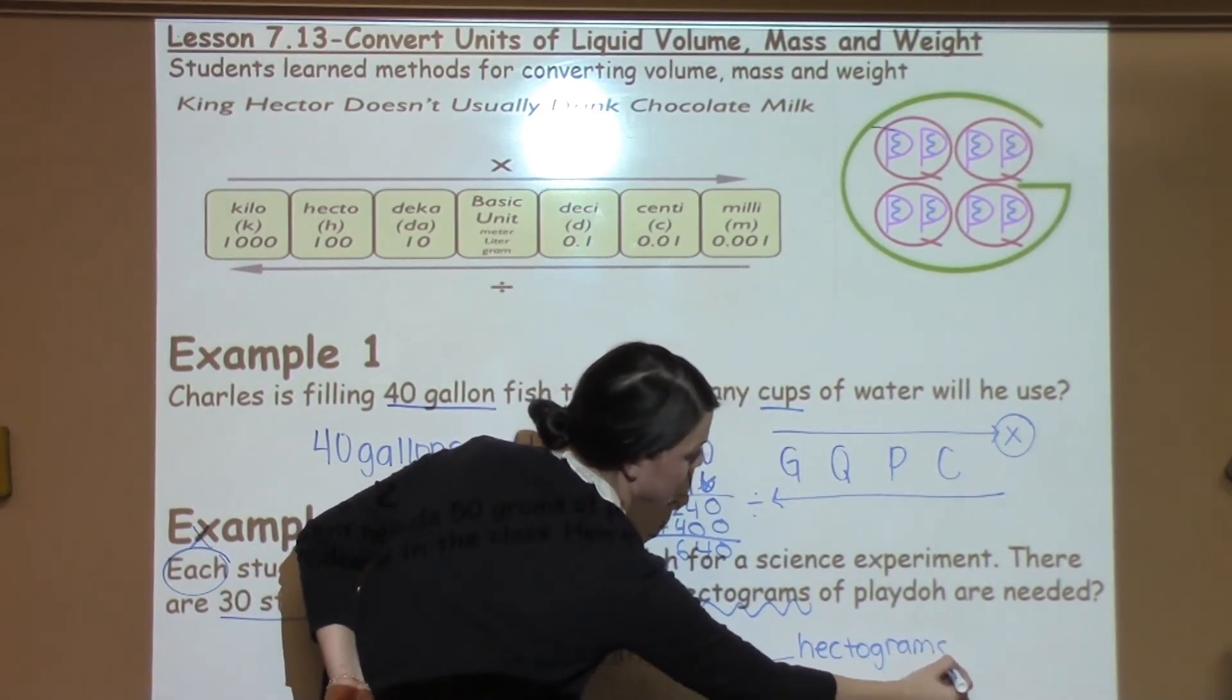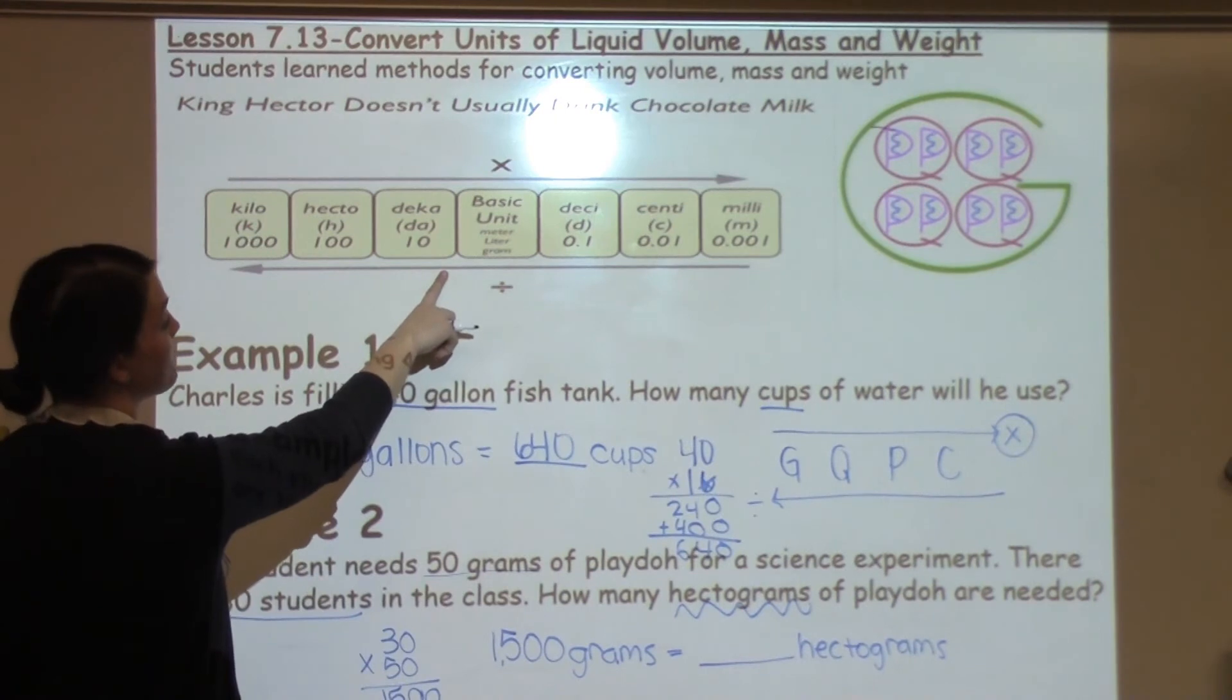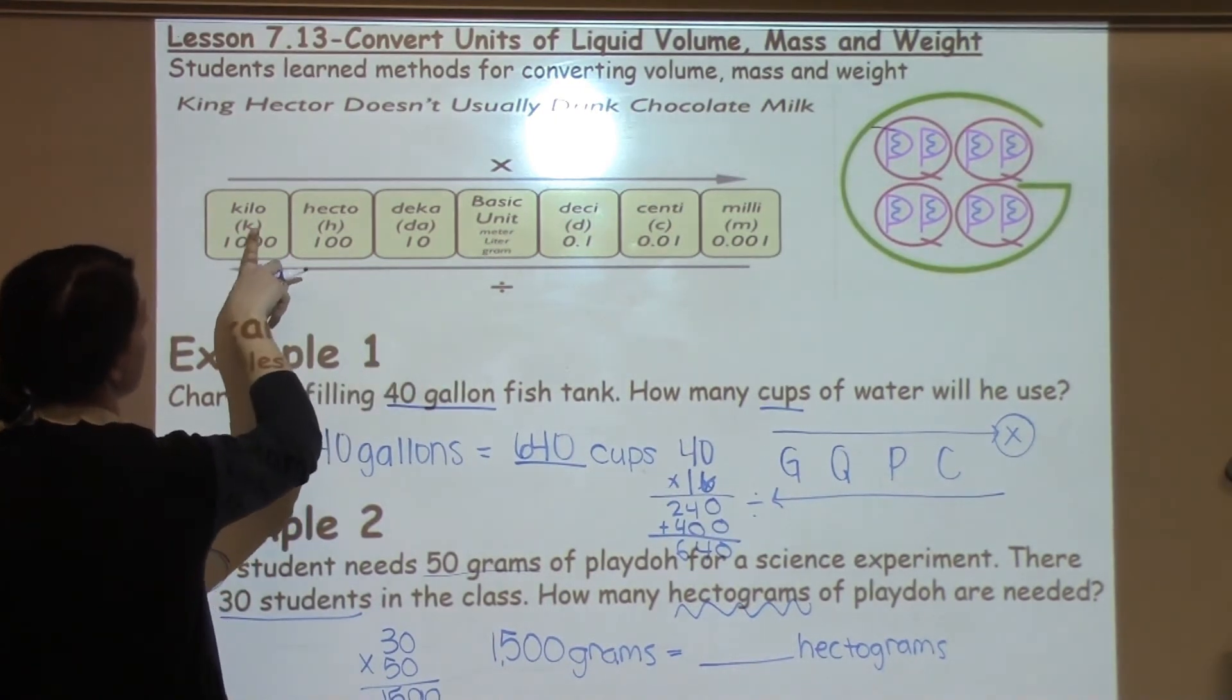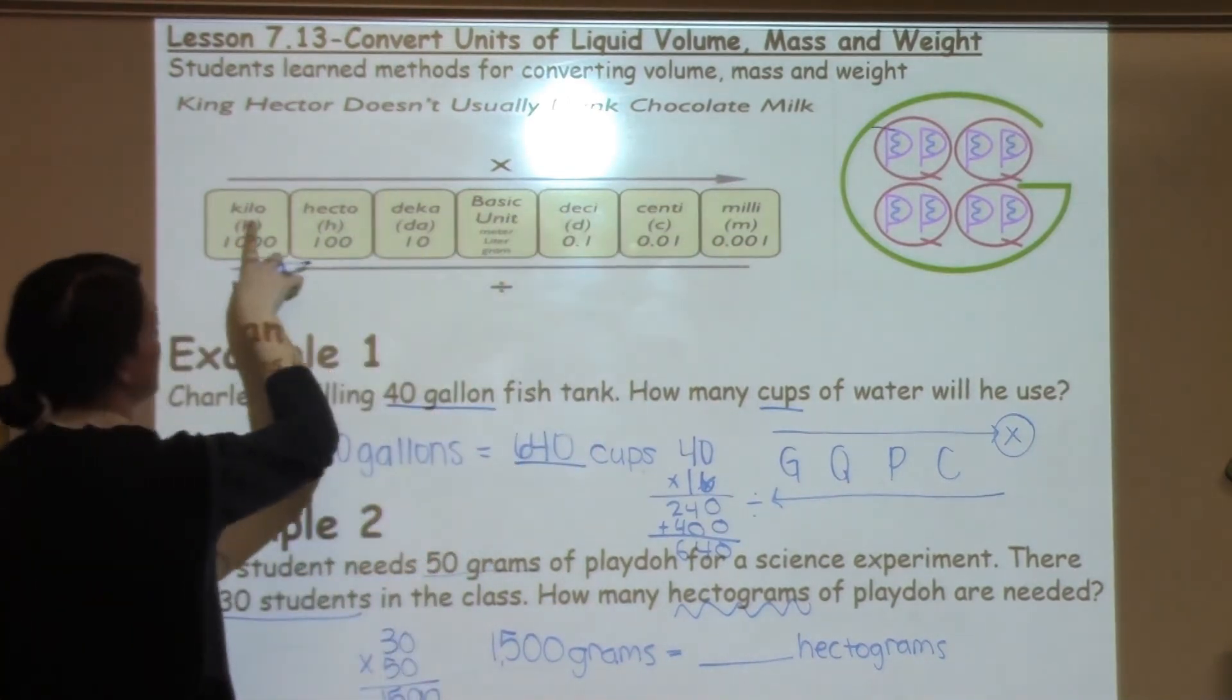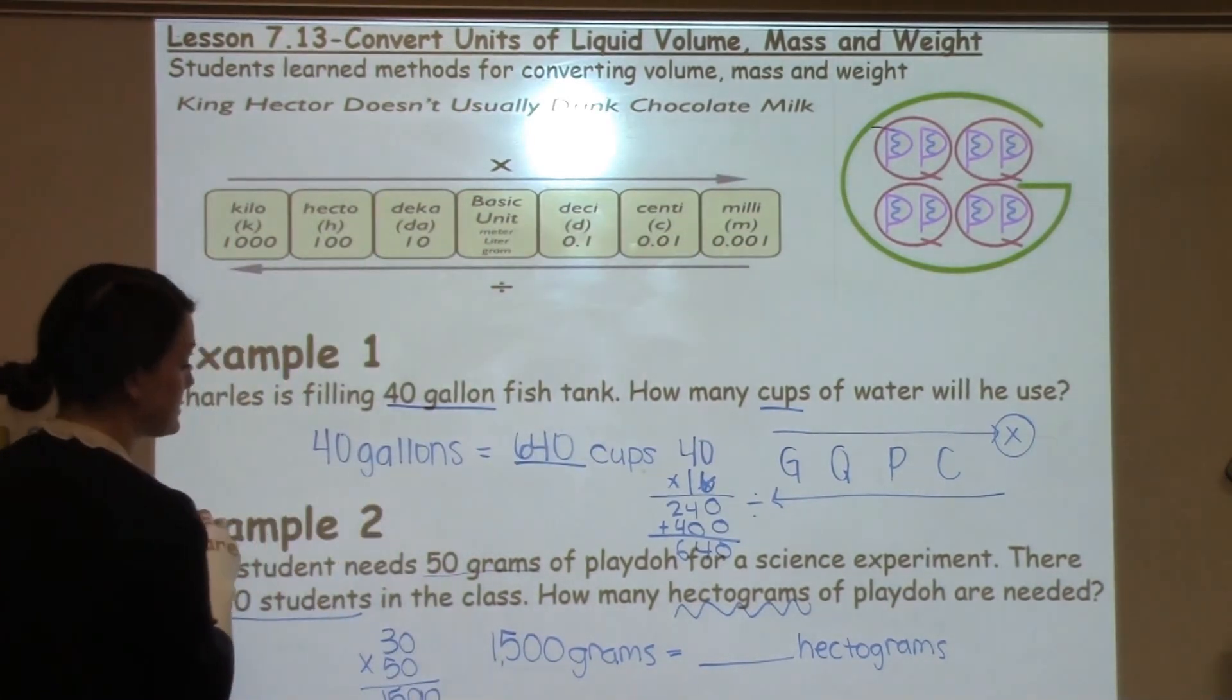And the way that I do that is by using my metric system chart, which shows me King Henry doesn't usually drink chocolate milk to help me remember the different units of measure in the metric system.